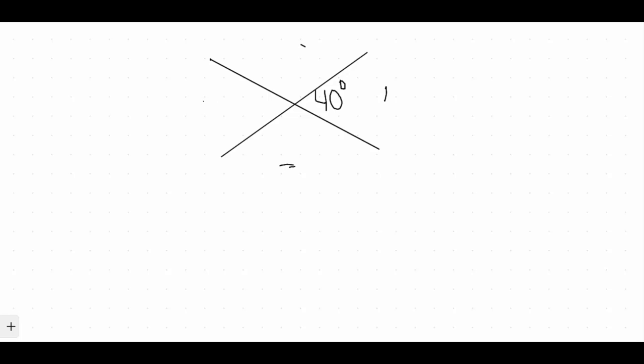All right, so using relationships that we know about angles, we're going to have to find the measure of each of the other three angles. So let's just call those A, B, and C. All right, so we're going to find the measure of angle A, the measure of angle B, and the measure of angle C using what we know about vertical angles and supplementary angles.